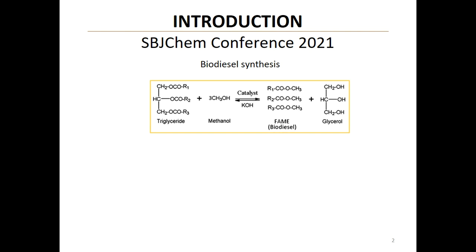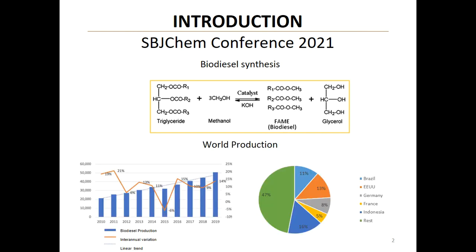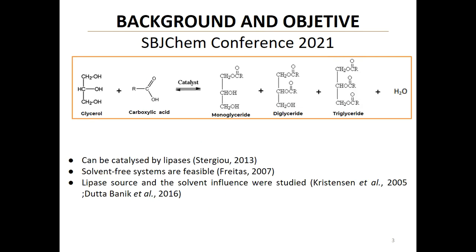Glycerol is a byproduct in biodiesel synthesis and it represents 10% of the mass. This industry is in constant growth. In 2019, the biodiesel world production was 50 million cubic meters, so a large amount of glycerol is produced per year, causing a price reduction. Therefore, these quantities represent the opportunity to generate novel processes to revalue this byproduct. One option is the esterification with different acids to produce glycerides of industrial relevance.